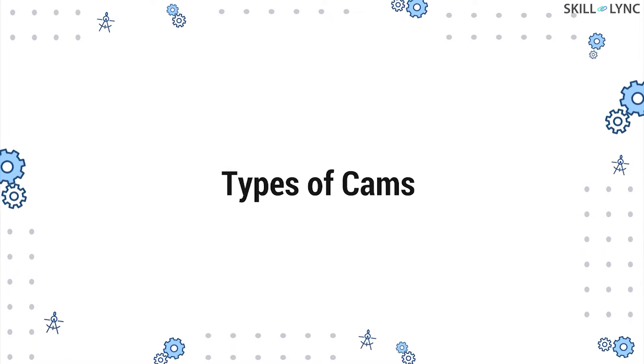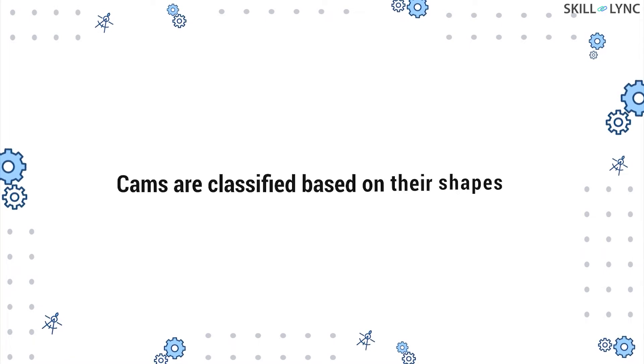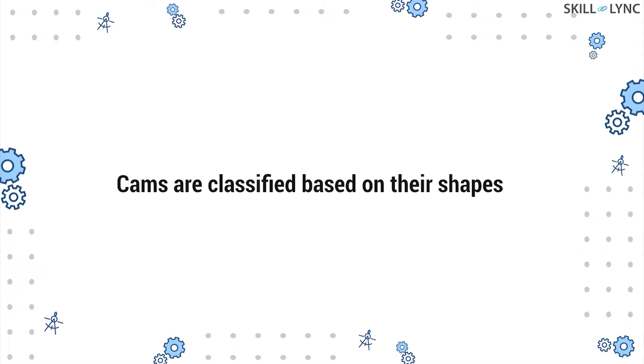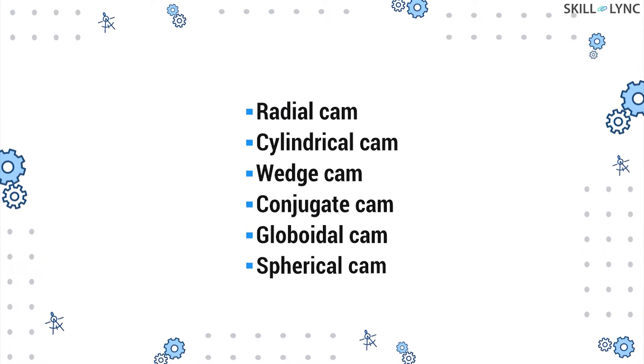Now, let's move on to discuss the types of cams. Cams can be classified into several types based on their shapes. There are radial cams, cylindrical cams, wedge cams, conjugate cams, globoidal cams, and spherical cams.